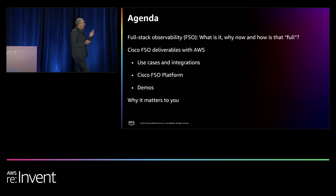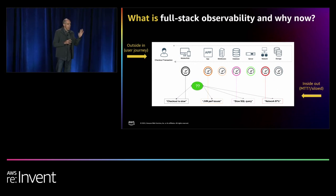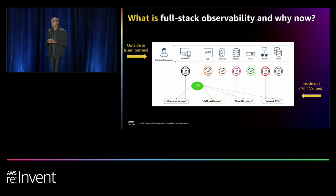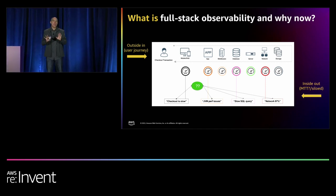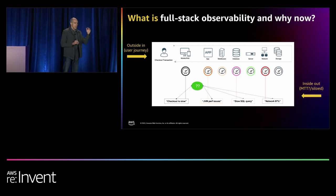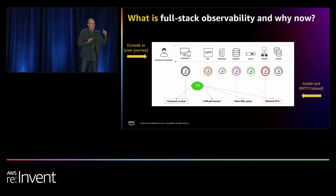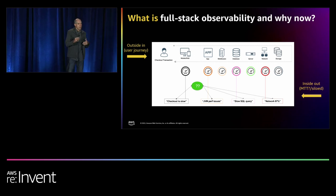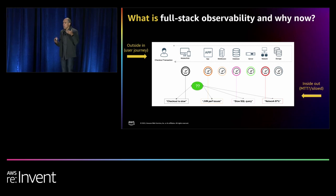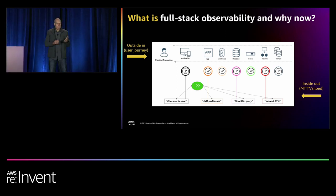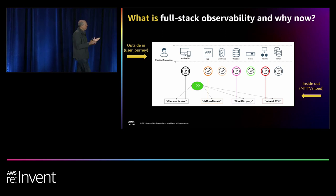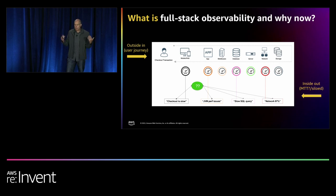So what is full stack observability and why now? Let's start with the what. Looking at this diagram, it portrays the problem statement we're addressing. At the top, you see a typical business transaction — in this case, a checkout — when someone on a browser or mobile device goes through the process of buying something. It hits many components running on AWS: the application itself, databases, EC2 instances, VPCs, S3 buckets, and so on.